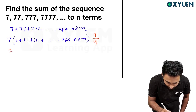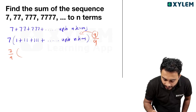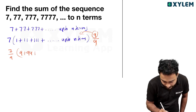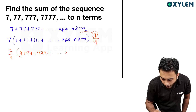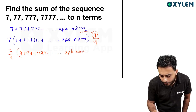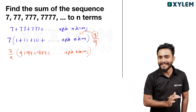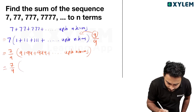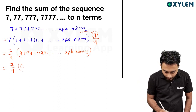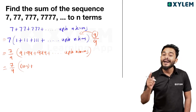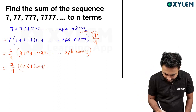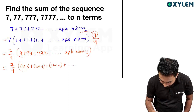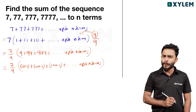So it is 7 by 9, into: 1×9 gives 9, plus 11×9 gives 99, plus 999, plus etc., up to n terms. This equals 7 by 9 times (10 minus 1) plus (100 minus 1) plus (1000 minus 1), plus etc., up to n terms.